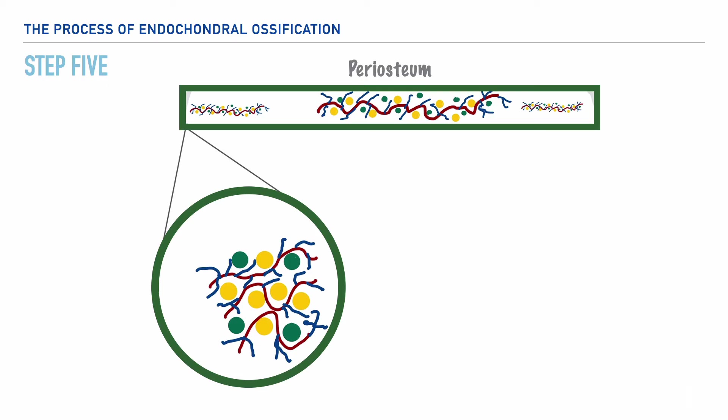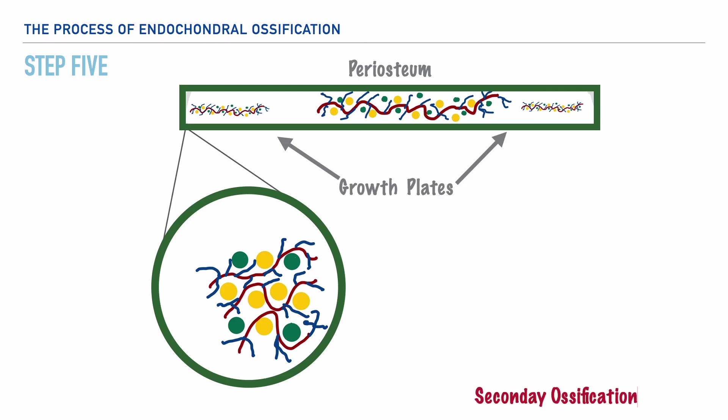After birth, we'll have a repeat of the process that occurred in the development of the primary ossification center. This time, however, the process takes place at the ends of the bone, or what we call the growth plates. We'll refer to these areas as secondary ossification centers. By this time we'll have fully developed bone, and it's important to note that some cartilage remains at the ends of the bone — more specifically, we'll refer to these as articular cartilage.